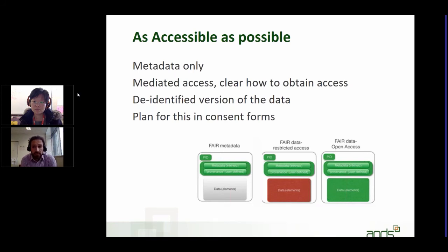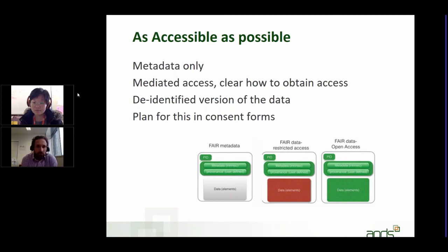A possible starting point is to provide the metadata. If the rest cannot be made available, at least the metadata is something. Perhaps more useful is making it available through mediated access, and in that case it's valuable to be clear about how the user can actually get access — by providing an email address, name, or telephone number. If the user has to go through an ethics procedure to get access, then clearly describe that procedure and what information is required to apply for it.